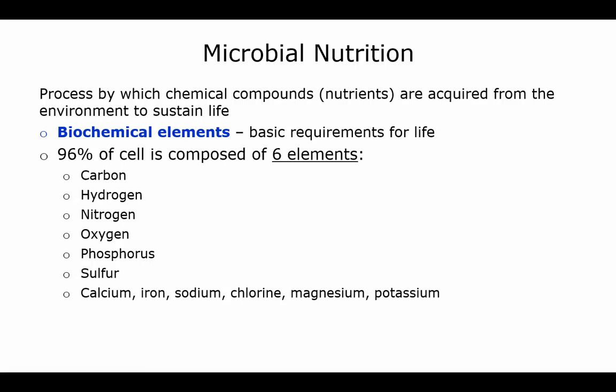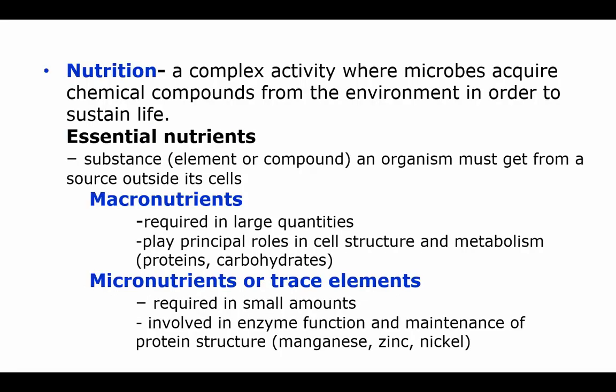Those are required for life and also there's some calcium, iron, sodium, chlorine, magnesium, and potassium that are required. Now objective number two asks about nutrition and this is an activity where the microbes get the chemical compounds they need from their environment in order to stay alive. There are essential nutrients which are substances that an organism must get from somewhere outside their cells.